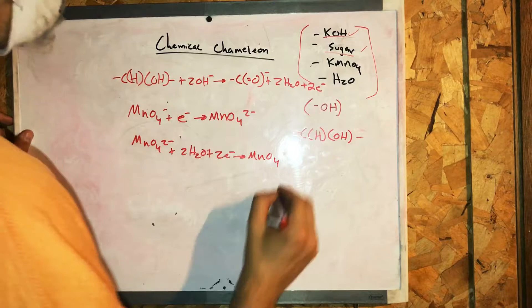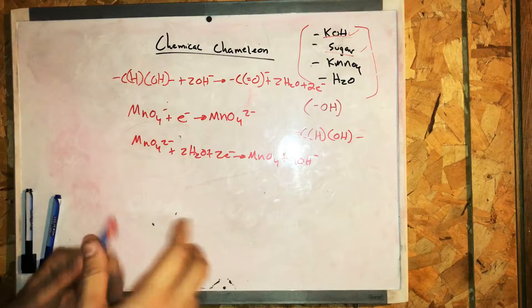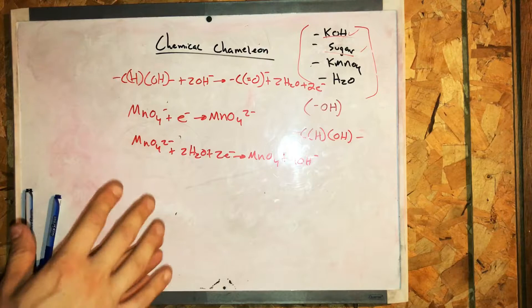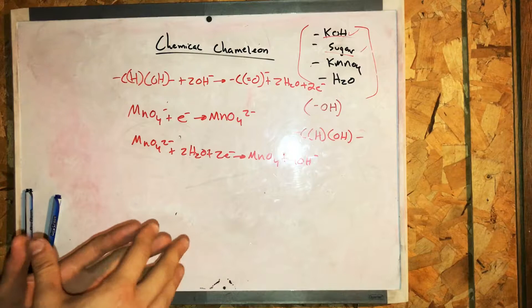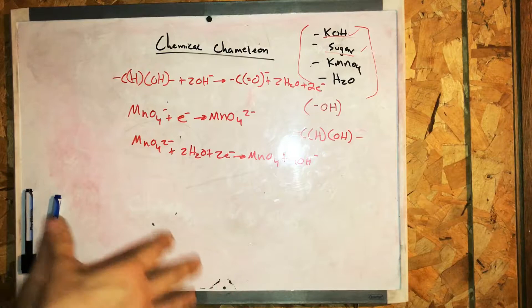...yields manganese dioxide plus OH- (hydroxide ion). Now, interesting fact: manganese dioxide will only precipitate in high concentrations. If potassium permanganate is added, a high concentration will yield a higher concentration of manganese dioxide. Hydrous manganese dioxide is brown in color, but at low concentrations it's yellow.